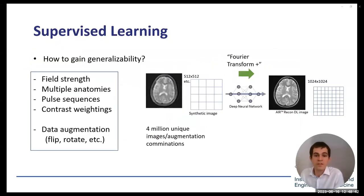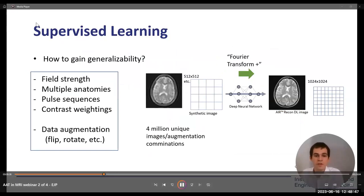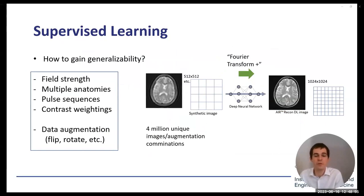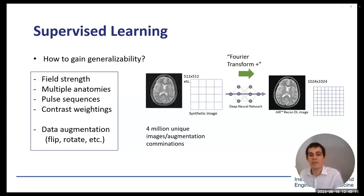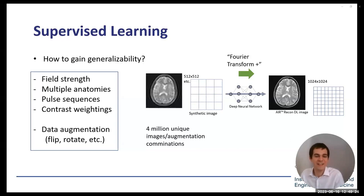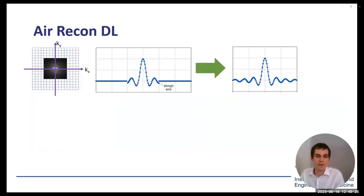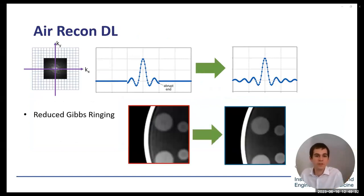To gain generalizability, the authors trained using images at multiple field strengths with different anatomies, different pulse sequences, varying echo times and repetition times for different contrasts. Data augmentation techniques such as changing intensity levels, flipping, and rotating the image give the network more examples of what truncated K-space might look like expanded, producing a stable and robust algorithm that doesn't generate artefacts.